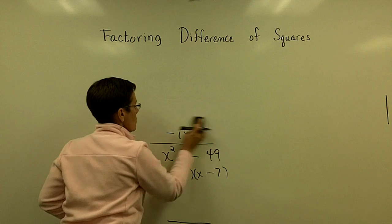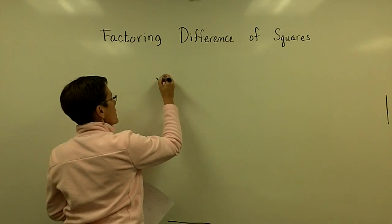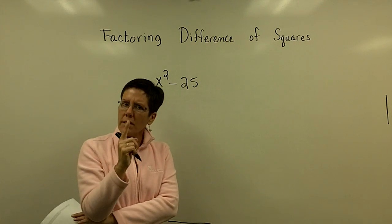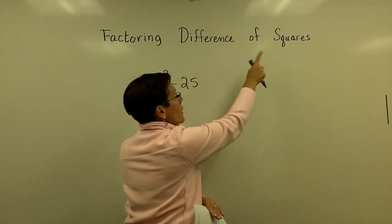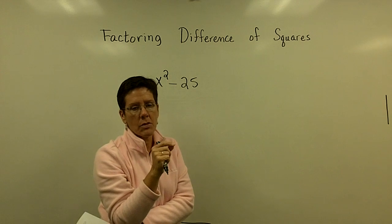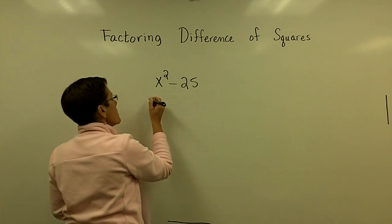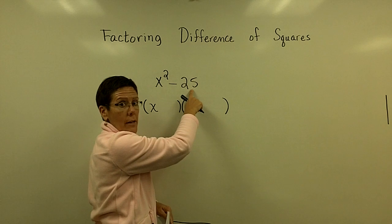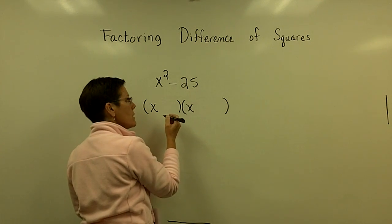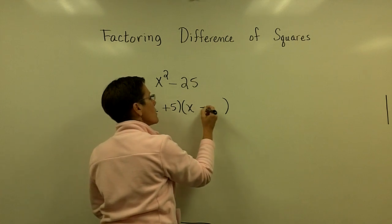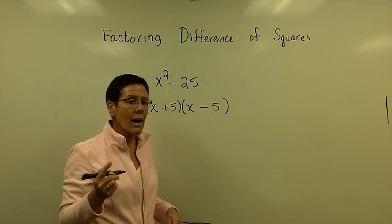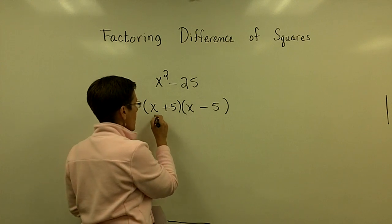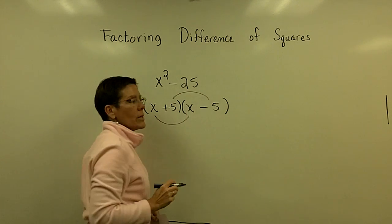Let's factor x squared minus 25. That's two terms with a minus sign. Remember, this is called the difference of squares — not the sum of squares; it doesn't work with a plus sign. I put an x in the front of each binomial. The square root of 25 is 5, so two numbers that multiply to negative 25 are plus 5 and minus 5. If I FOIL that out, the 5x and minus 5x cancel, leaving just x squared minus 25.